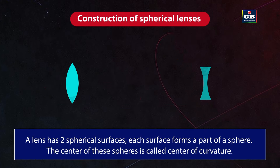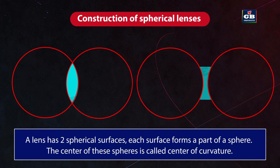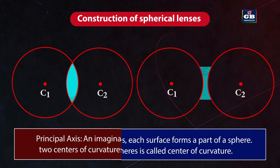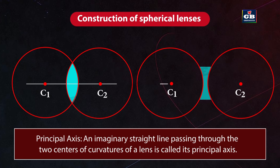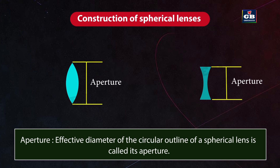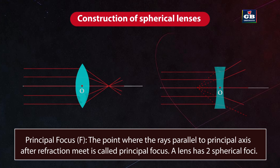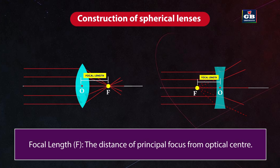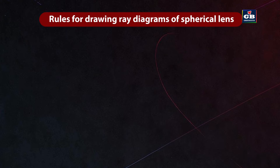A lens has two spherical surfaces, each forming part of a sphere. Key terms: center of curvature — the centers of the two spheres; principal axis — an imaginary straight line through the two centers of curvature; optical center (O) — the central point of the lens; aperture — the effective diameter of the lens; principal focus (F) — the point where rays parallel to the principal axis meet after refraction; focal length (F) — the distance of the principal focus from the optical center.